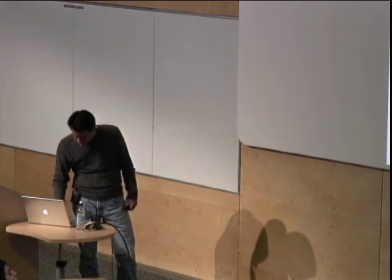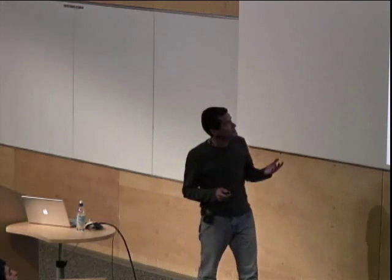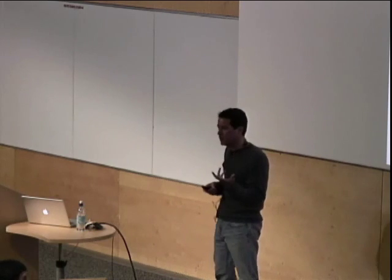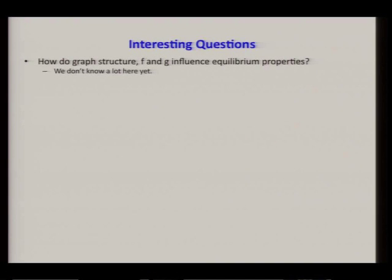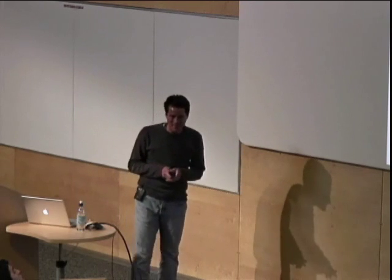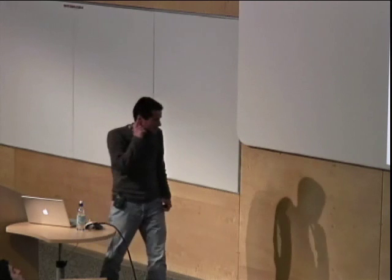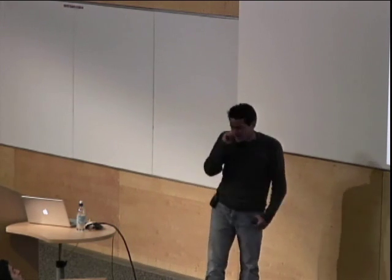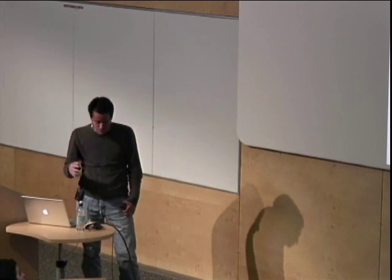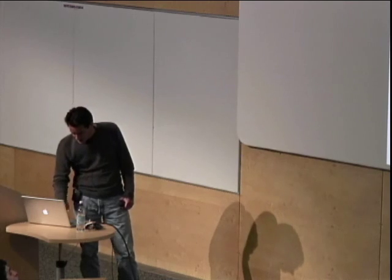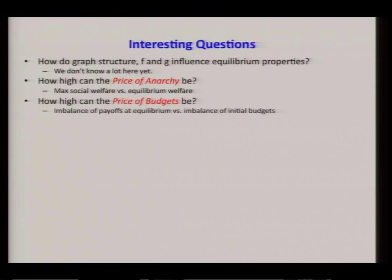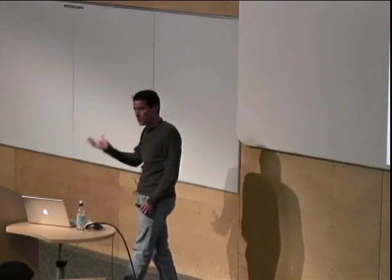Here are some interesting questions one might ask about this model. An obvious one is how network structure and properties of F and G influence actual equilibrium properties — we're quite interested in this but don't know a lot yet. On the other hand, about broader aspects of equilibria including the price of anarchy, we can say quite a bit. The two quantities I want to focus on are the price of anarchy — comparing max social welfare versus equilibrium welfare — and a new quantity called the price of budgets, which is essentially the extent to which the network structure and dynamics can amplify inequalities in the initial budgets.